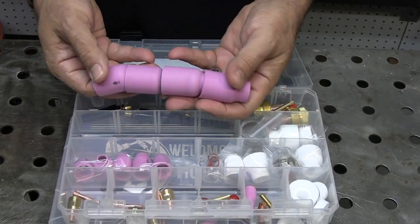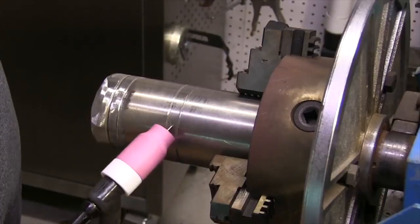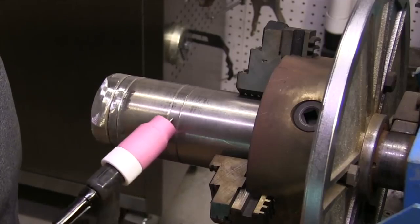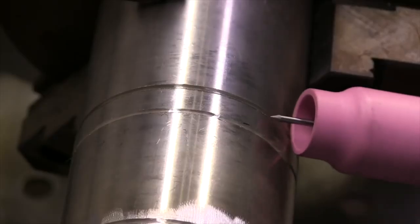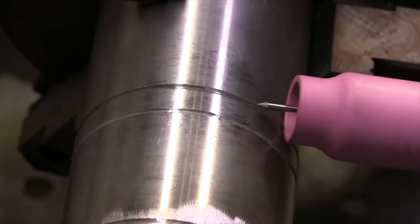It comes with a 6, 8, 10, and 12 cup which are great for walking the cup. They have lots of other uses. They can be used on steel as well as aluminum, but they're really good for walking the cup.